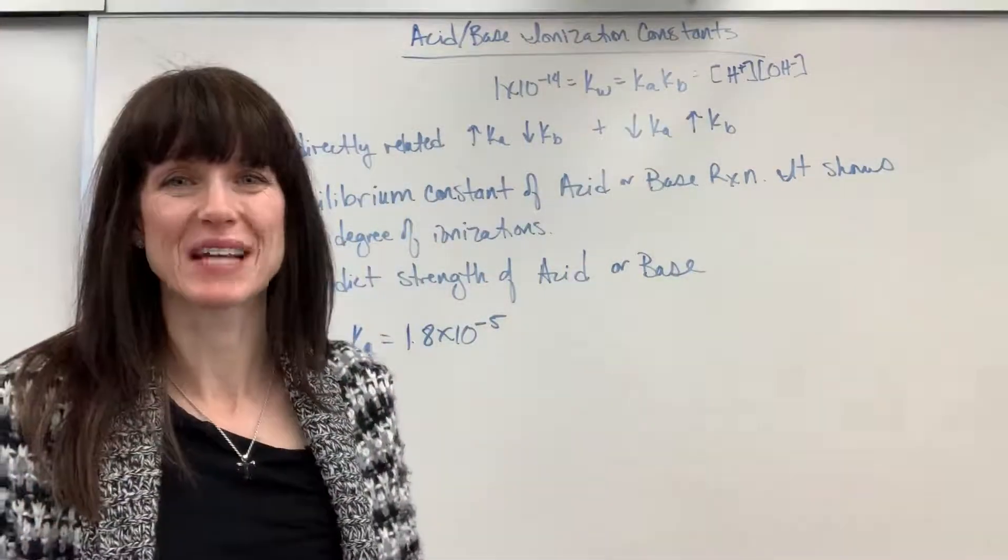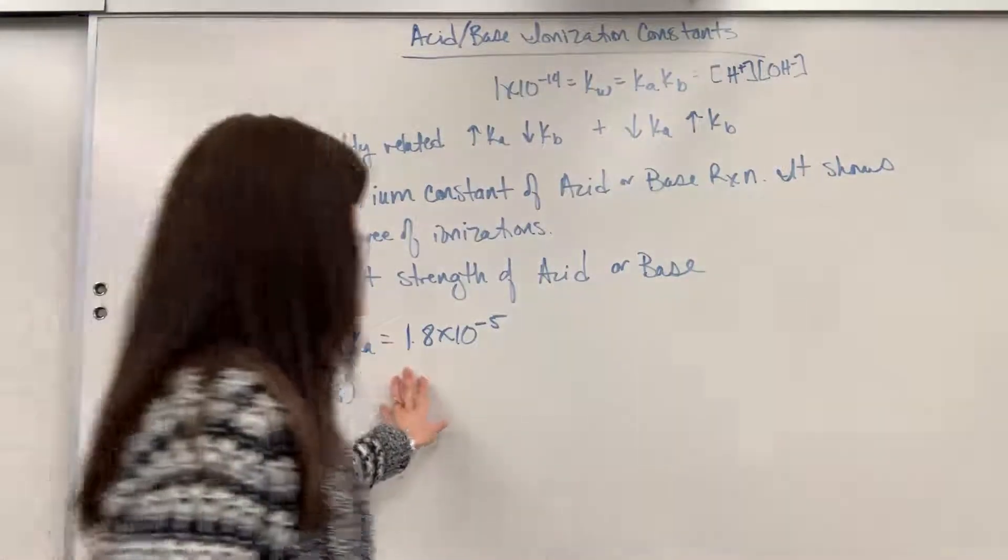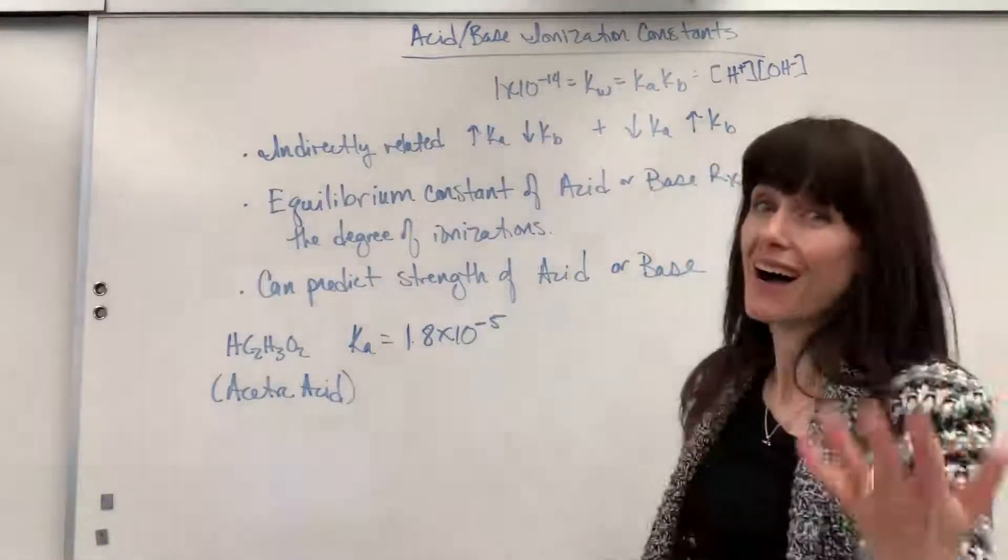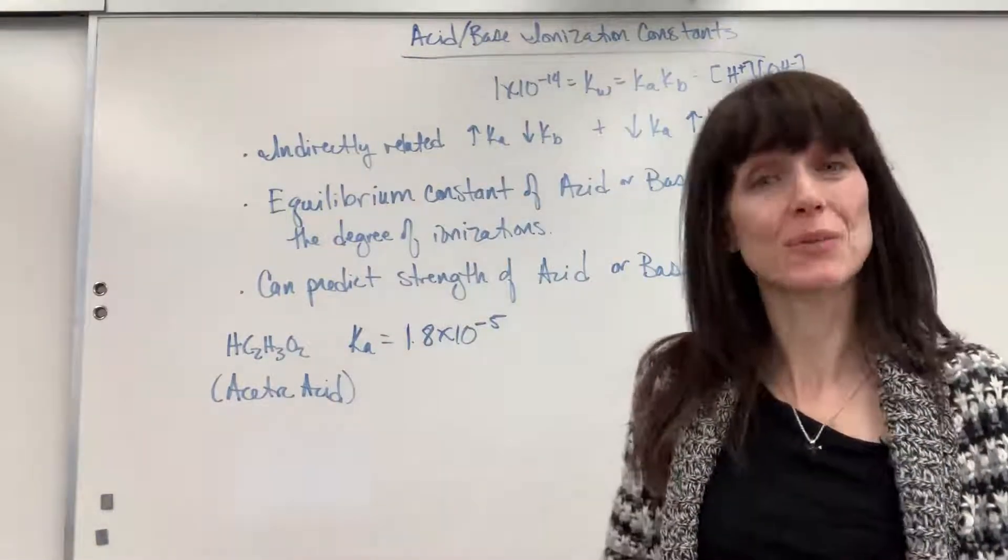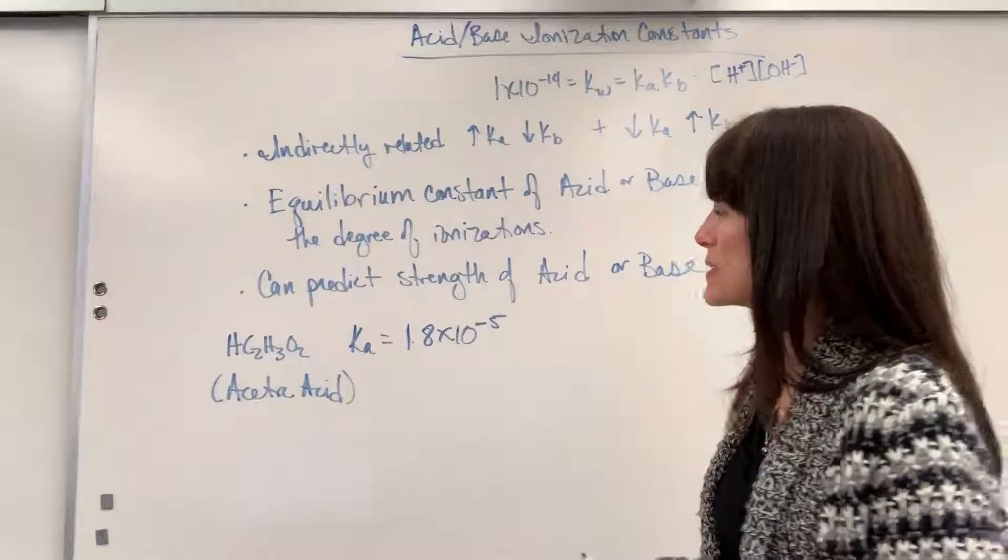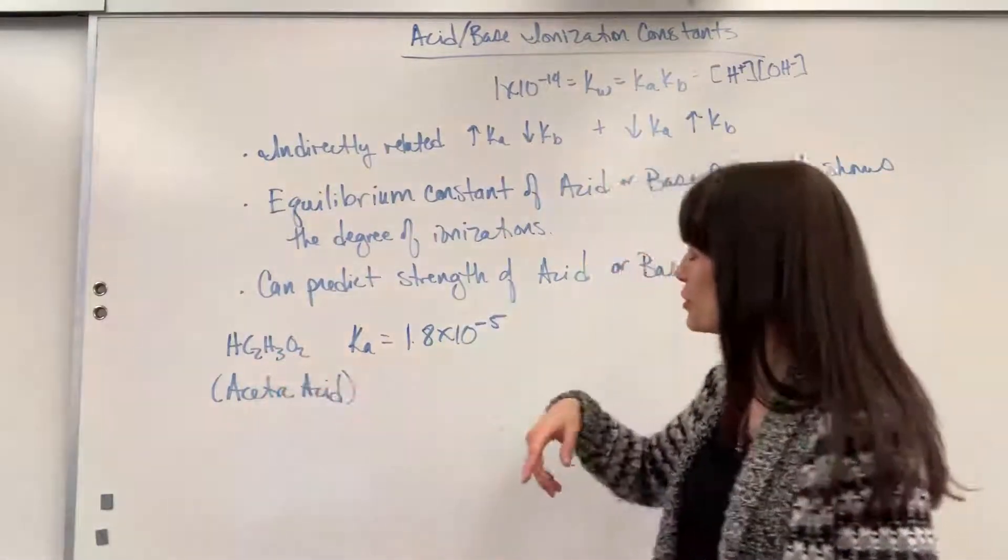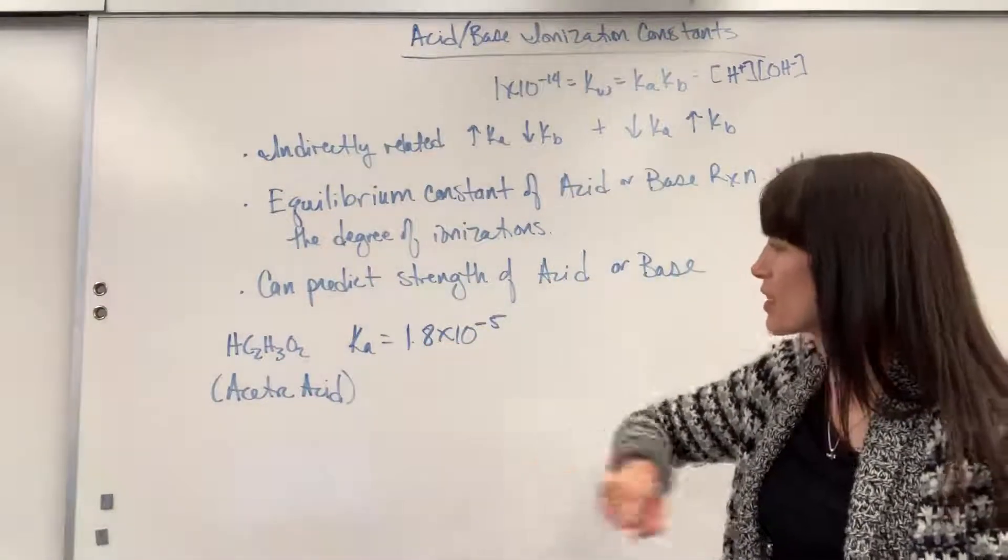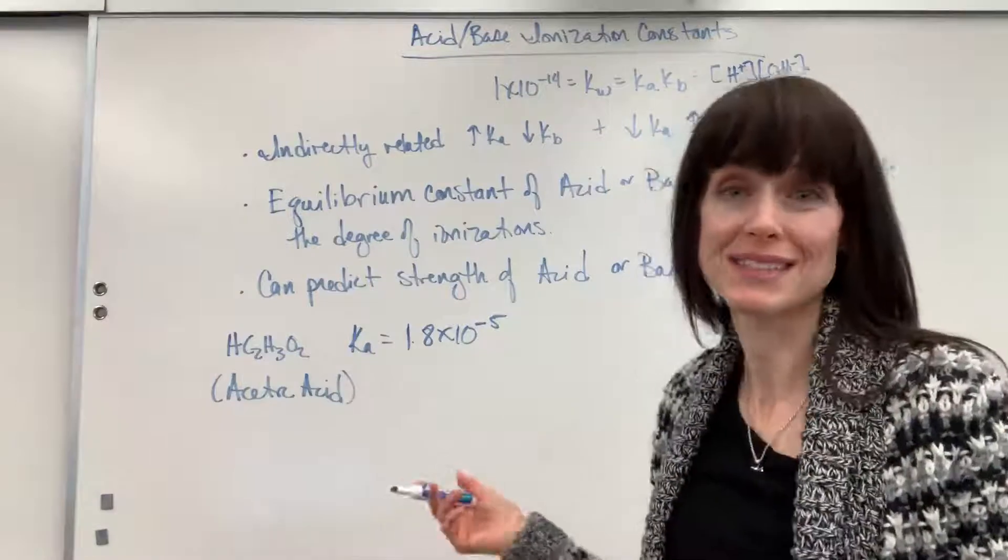So, I want to show you just a quick example of how to use this formula. Let's say that you're given the equilibrium constant, so the ionization constant. Same thing, just ionization is a little more specific for acids and bases. Then you're given acetic acid, HC2H3O2, the ionization constant for this acid is 1.8 times 10 to the minus 5.